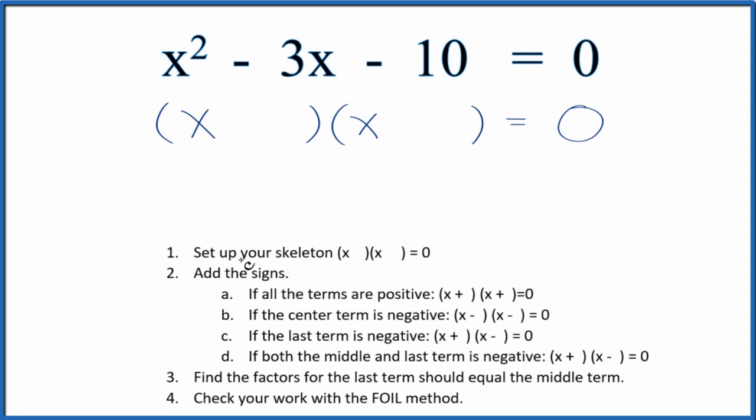So we start out with a skeleton here that kind of guides our work as we do this. So we have a negative and a negative. If both the middle term and the last term are negative, we're going to put a plus and then a minus. That gets us started.